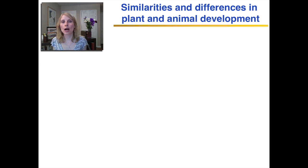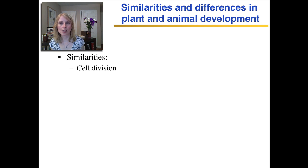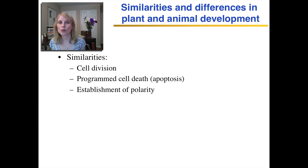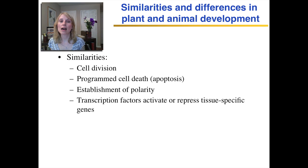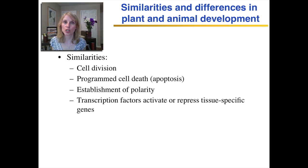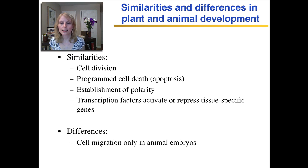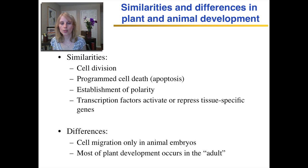So lastly, let me summarize what I just talked about. The similarities are that both plants and animals have cell division for growth, programmed cell death, establishment of polarity, and transcription factors that either activate or repress tissue-specific genes so that cells know what they should become. The differences are that cell migration only happens in animal embryos, and most of the interesting development in plants happens after the embryo stage, unlike in animals.